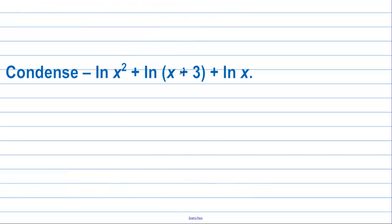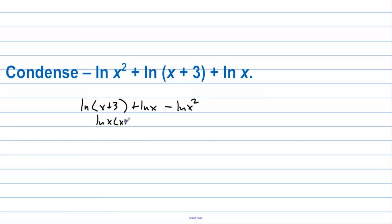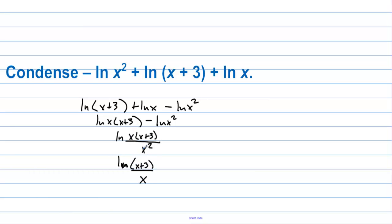Condense: negative ln x plus ln(x + 3) plus ln x. Rearranging, we have ln(x + 3) plus ln x minus ln(x²), since the negative ln x with power becomes ln(x²). Combining the first two using multiplication gives ln(x(x + 3)), then dividing by x² gives ln(x(x + 3)/x²). Canceling one x gives the final answer: natural log of (x + 3) over x.